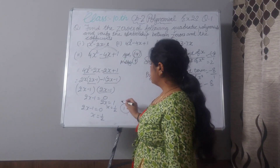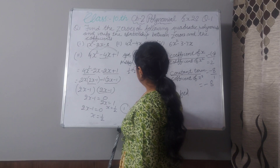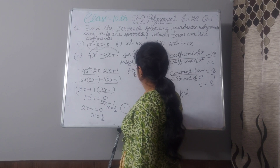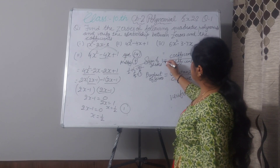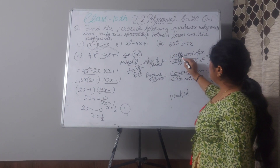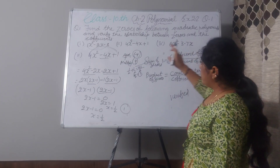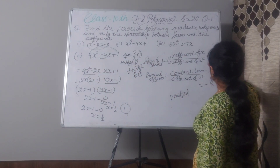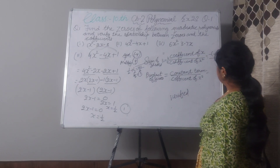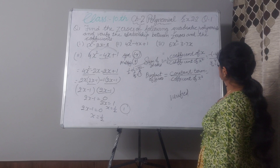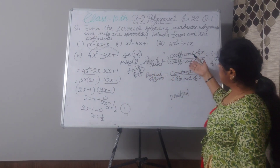Now, sum of zeros: 1/2 plus 1/2 equals 2/2 equals 1. Sum of zeros is 1. According to the relationship formula, it is minus b by a — coefficient of x divided by coefficient of x². Coefficient of x is minus 4, so minus (minus 4) divided by 4 equals plus 4 over 4 equals 1. Sum of zeros by factorization is 1 and by the relationship formula is also 1. Verified.